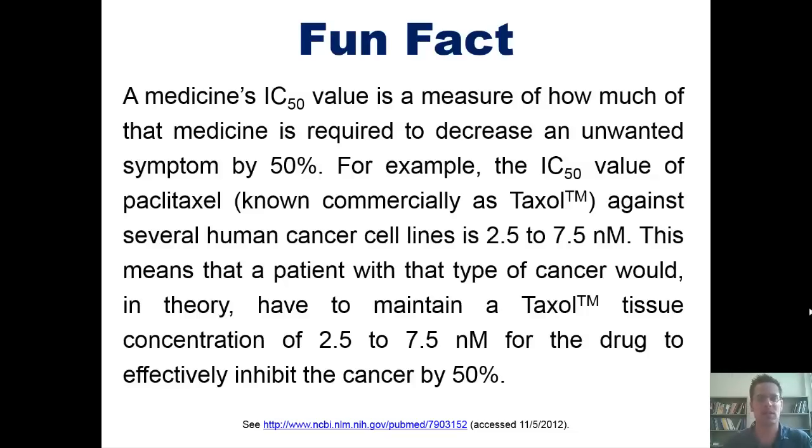A medicine's IC50 value is a measure of how much of that medicine is required to decrease an unwanted symptom by 50%. For example, the IC50 value of Paclitaxel, known commercially as Taxol, against several human cancer cell lines is 2.5 to 7.5 nanomolar. This means that a patient with a specific type of cancer would in theory have to maintain a Taxol tissue concentration of 2.5 to 7.5 nanomoles per liter for the drug to effectively inhibit the cancer by 50%.